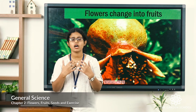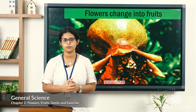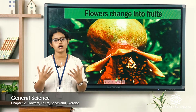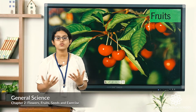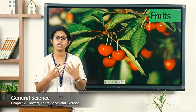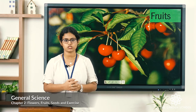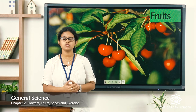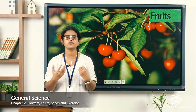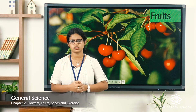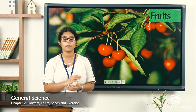So flowers are the most colourful and most beautiful part on the stem, and you can see different kinds of flowers. Next let's see about fruits. Most plants bear fruit. Flowers change into fruit and you can see different kinds of fruits. Fruit is the most tastiest part on the stem.